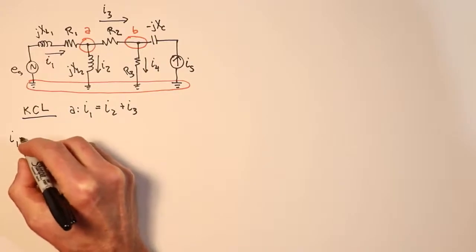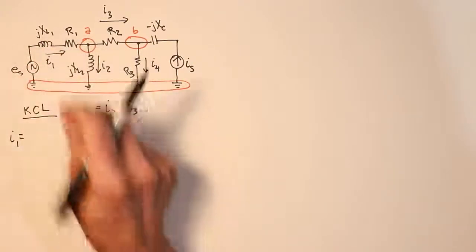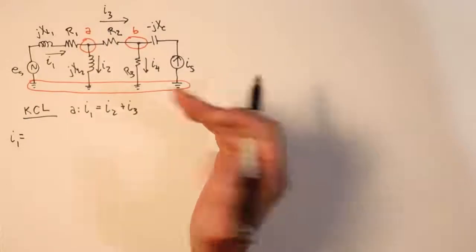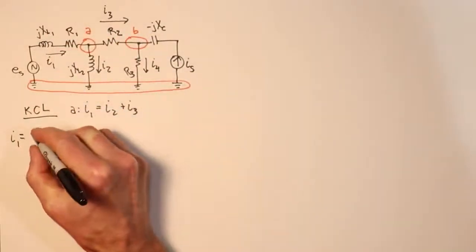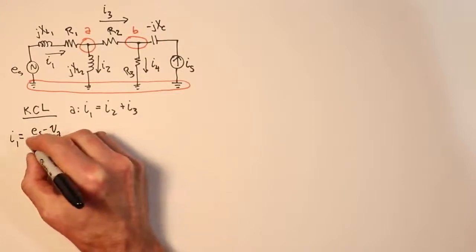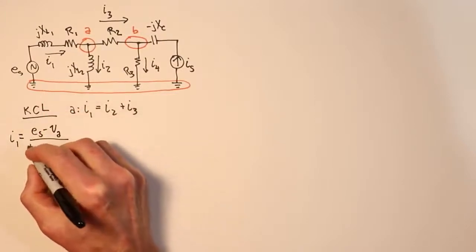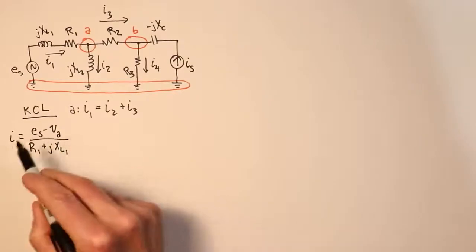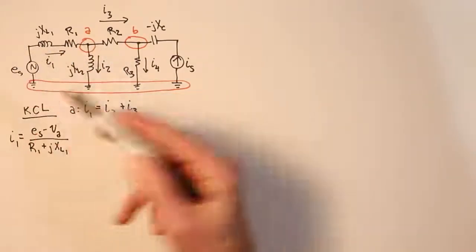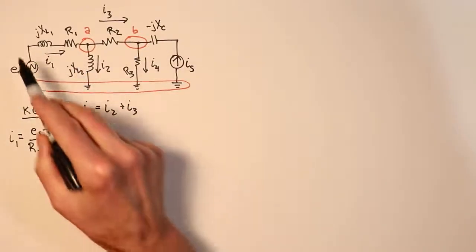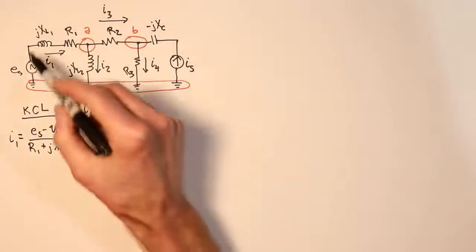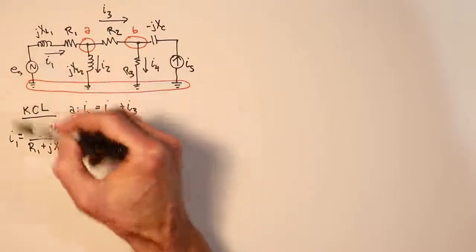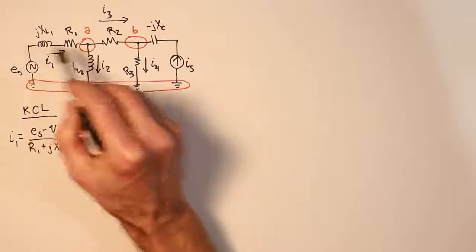The individual currents we don't know, but I can write them in terms of some things that we do know, which would be things like ES and R1 and so forth. So I1 is written in terms of its Ohm's law equivalent. What's the voltage across that pair of components and then divided by that impedance? So the voltage across that is essentially ES minus VA. That's divided by R1 plus JXL1. Now you might ask, why is it ES minus VA instead of VA minus ES? Well, that's solely because of the direction that we chose for I1. We're flowing from high to low, essentially.